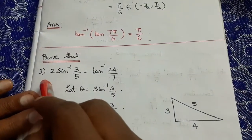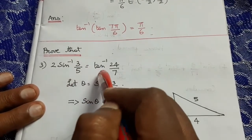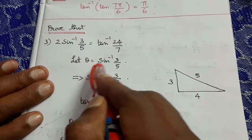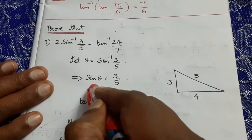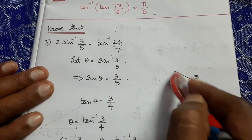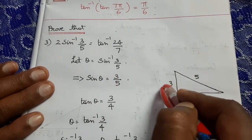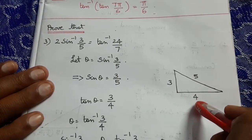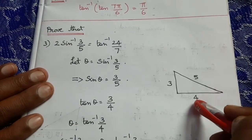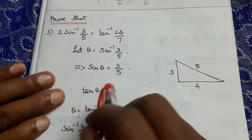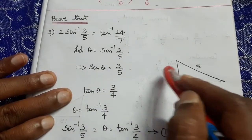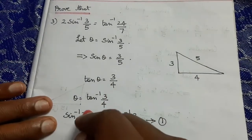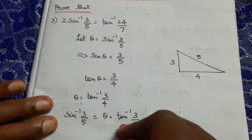Question 3: Prove that 2sin⁻¹(3/5) = tan⁻¹(24/7). Let θ = sin⁻¹(3/5), so sin θ = 3/5. In a right-hand triangle, opposite = 3, hypotenuse = 5. By Pythagoras theorem, adjacent = √(5² − 3²) = 4. So tan θ = 3/4, giving θ = tan⁻¹(3/4). Therefore sin⁻¹(3/5) = tan⁻¹(3/4).